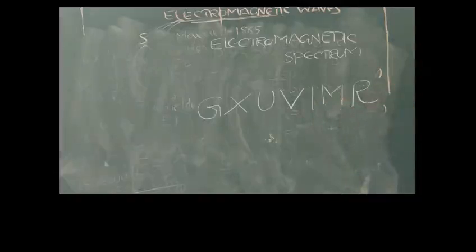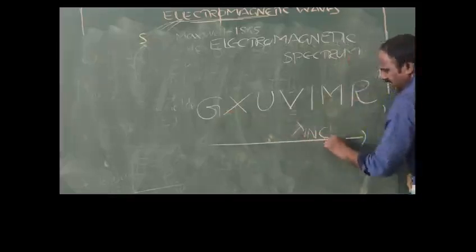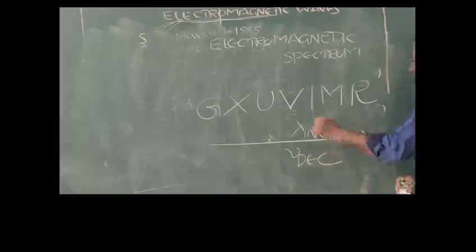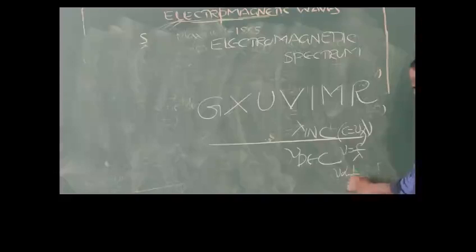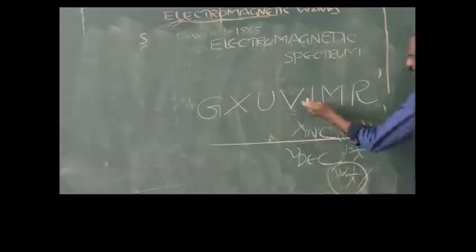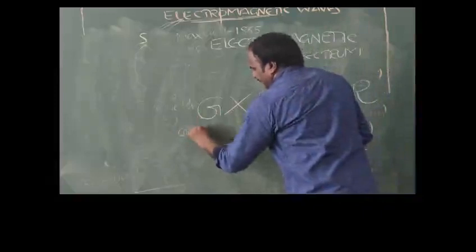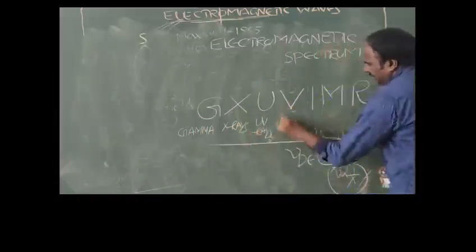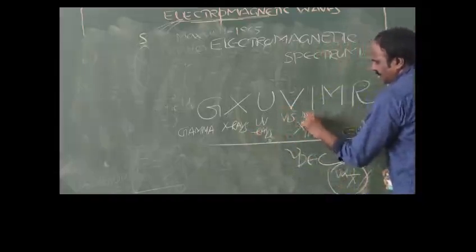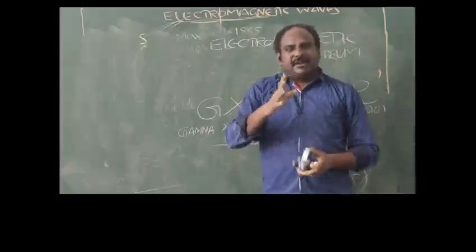We write this mnemonic because if we go from gamma to radio, wavelength goes on increasing. As wavelength increases, frequency decreases, since c = fλ, so f = c/λ. In this mnemonic: G stands for gamma rays, X for X-rays, U for ultraviolet rays, V for visible light, I for infrared, M for microwave, and R for radio waves.